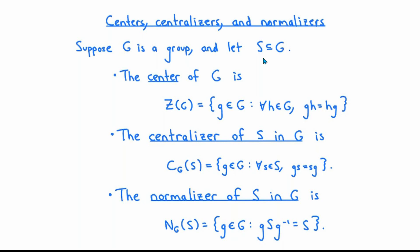Next, if S is any subset of the group G, then the centralizer of S in G, denoted by C sub G of S, is the set of all g's in G with the property that gS equals Sg for every S in S. In other words, the centralizer of S in G is the set of all elements of G which commute with every element of S.